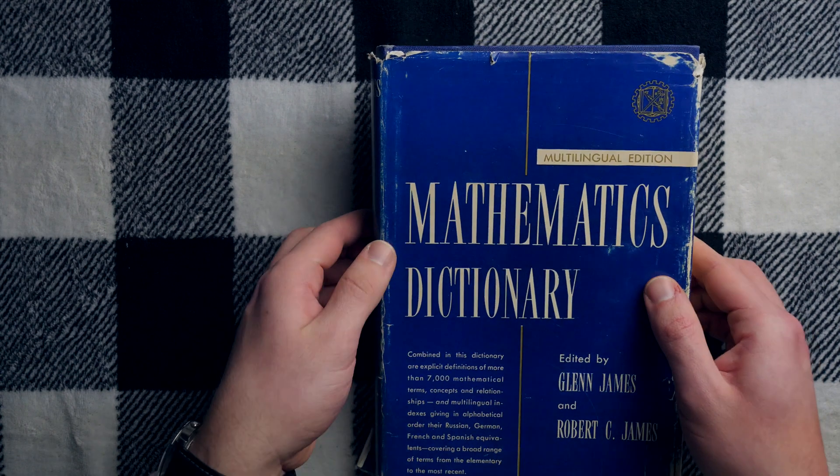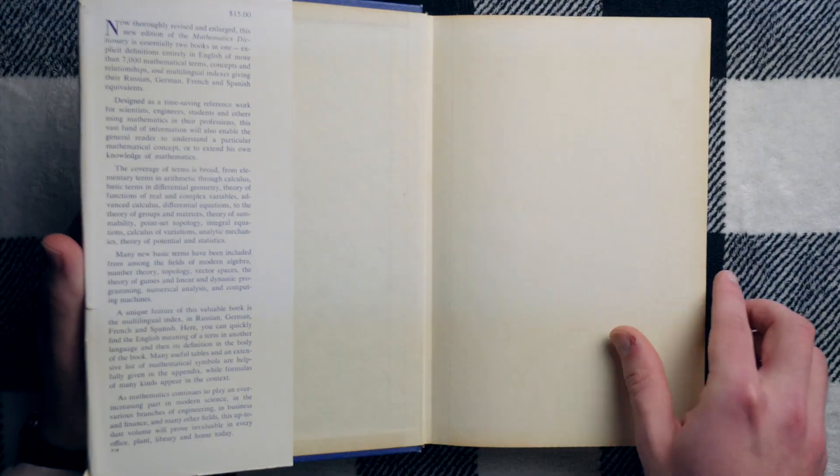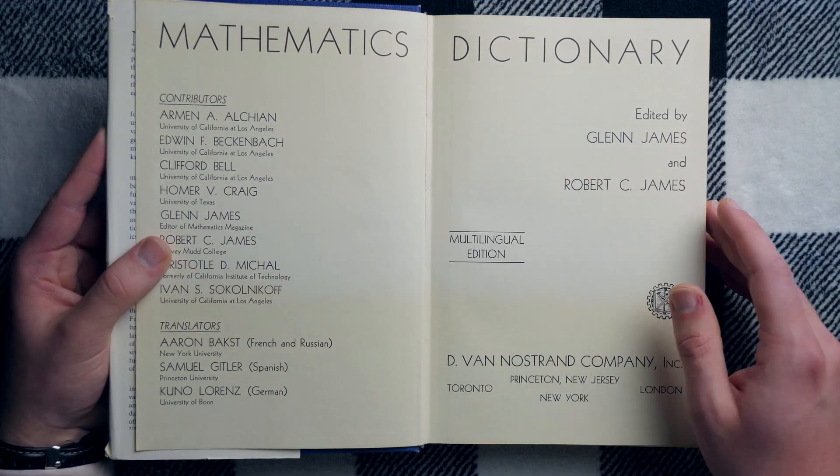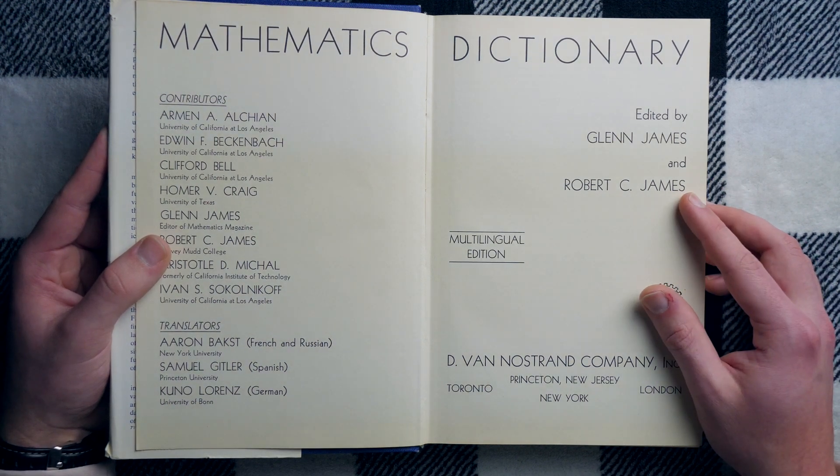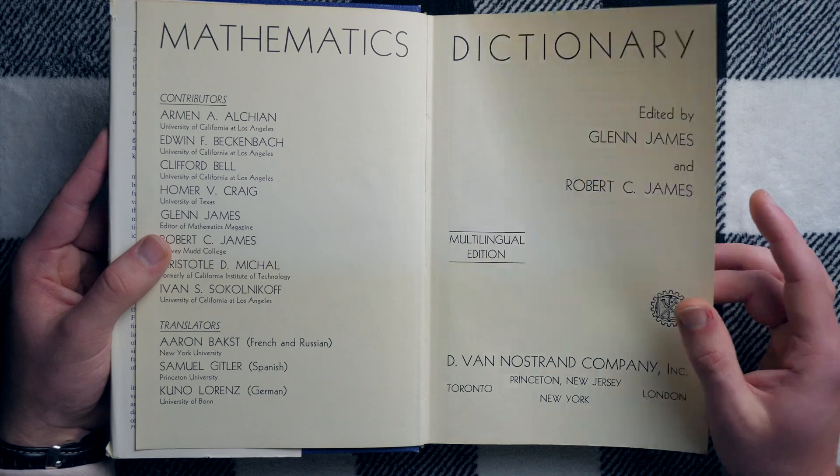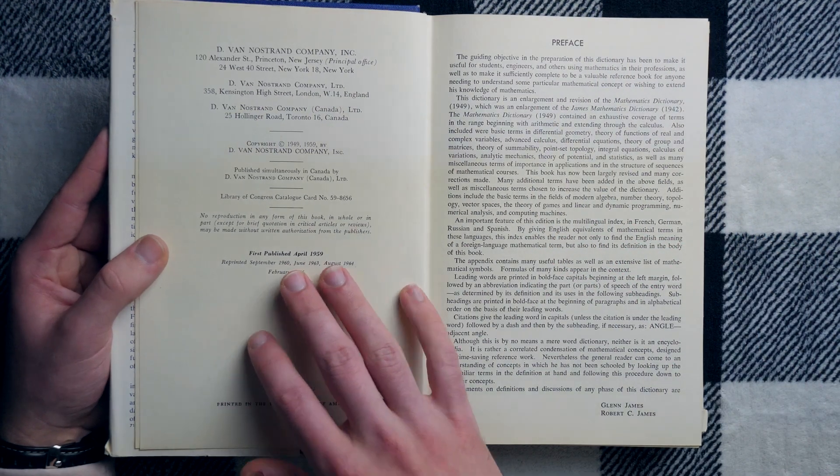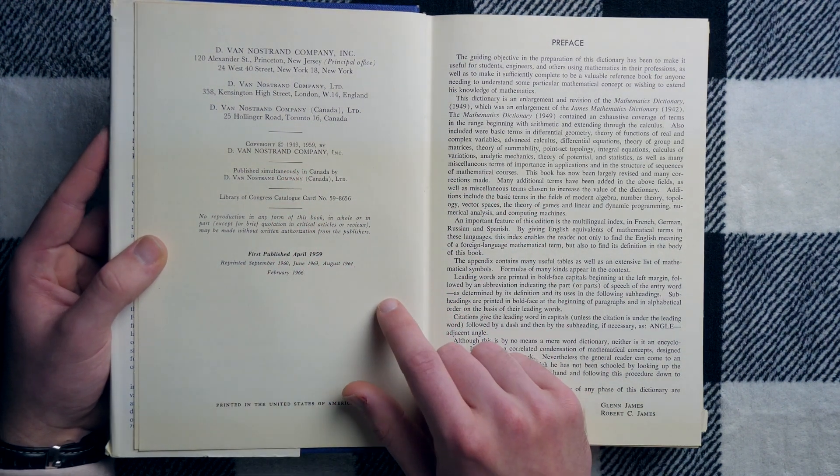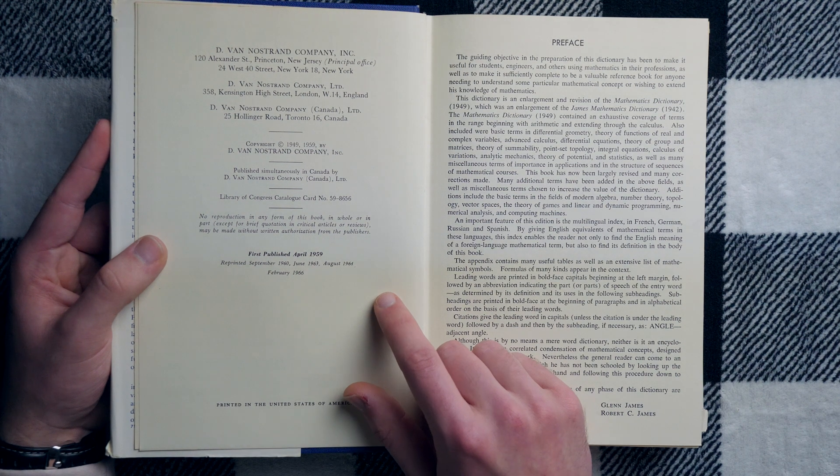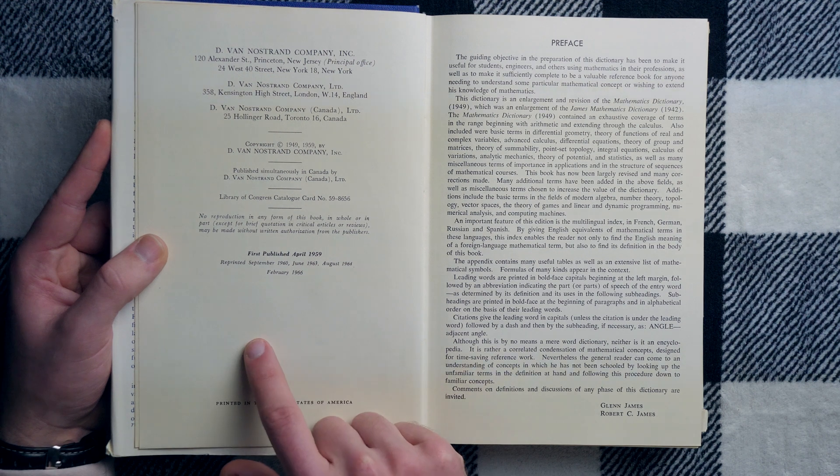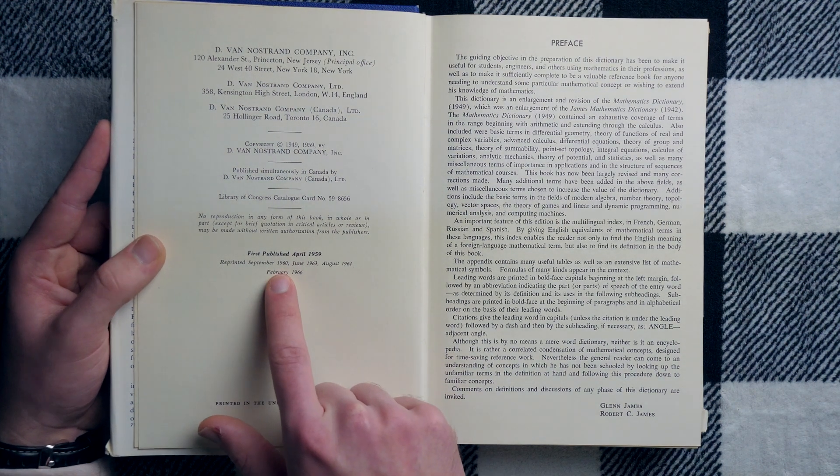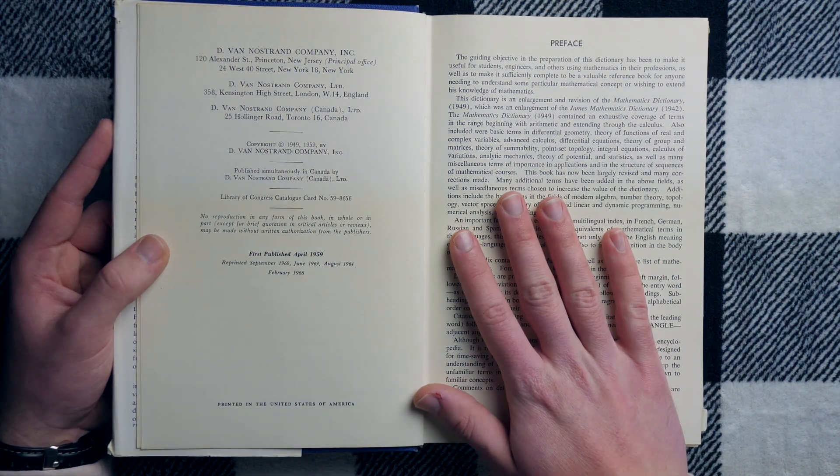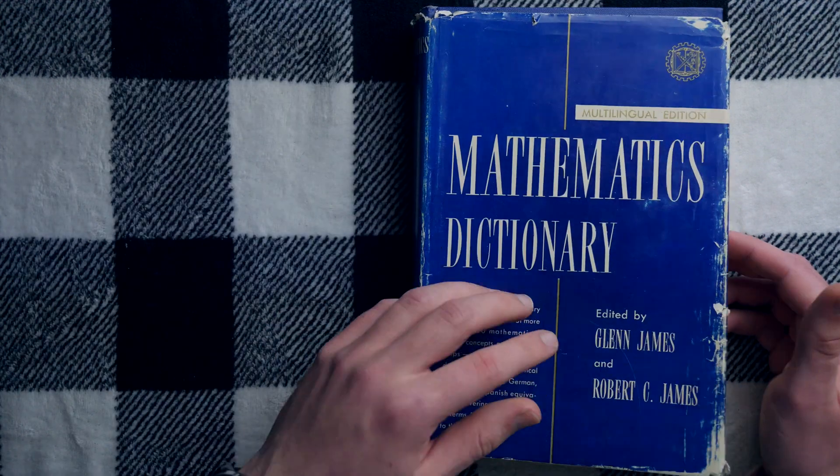Let's see when this dictionary came out, when it was published originally. I like this front layout here. It's pretty cool. Interesting sans serif font that they've chosen here. I feel like it's a pretty modern-looking font. Copyright 1949 is the first date on there. Actually, no. It says first published April 1959. And then it was reprinted in 1960, 63, 64, and 66. So I'm guessing this one was printed in 1966. That's pretty cool. So this is like 60 years ago this dictionary was printed.